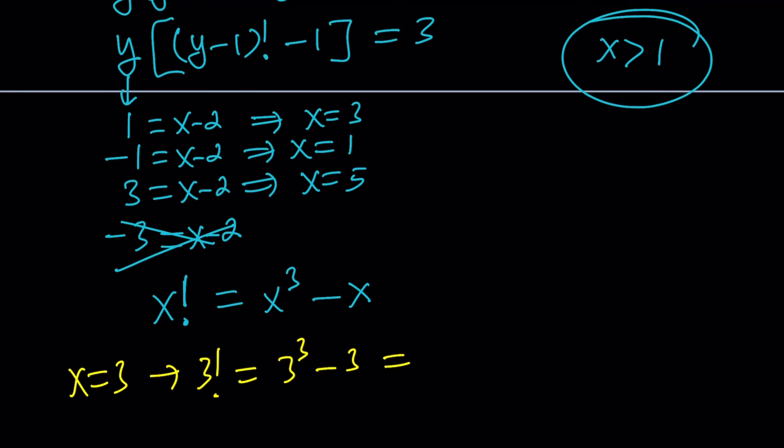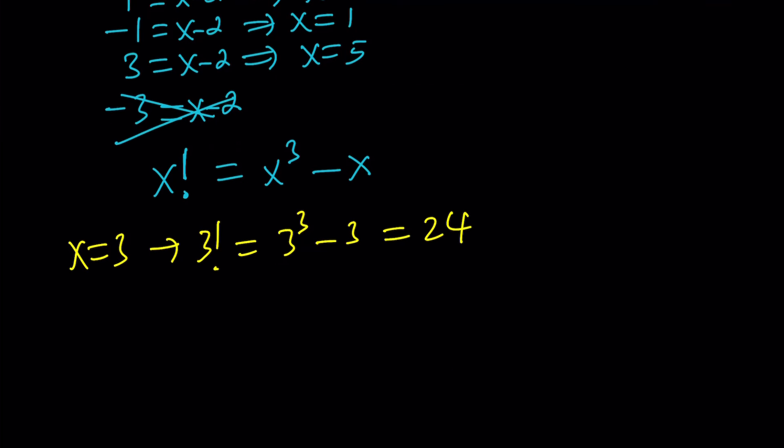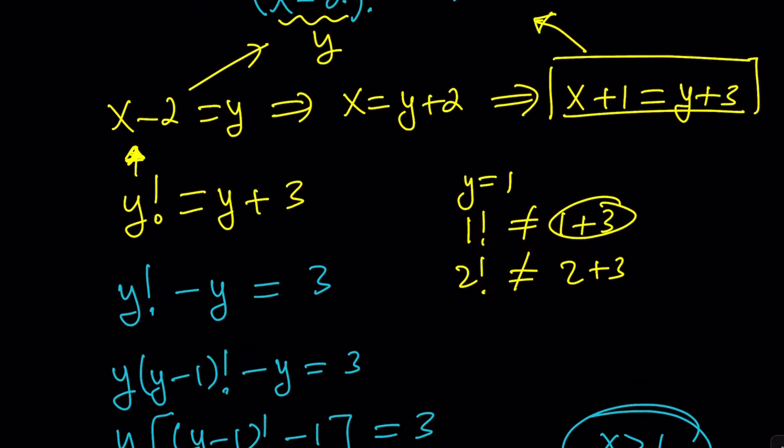3 cubed is 27. 27 minus 3 is 24. As you can see, this is not going to work, because 3 factorial does not equal 24, right?